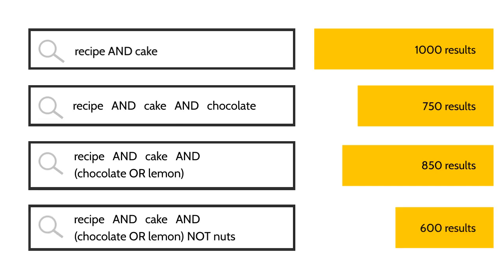When Pat uses the Boolean operator NOT, he excludes a keyword. The cake recipe can be chocolate or lemon, but it cannot include nuts. NOT decreases the number of results.